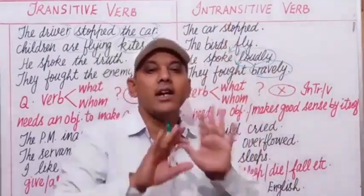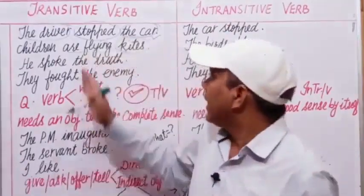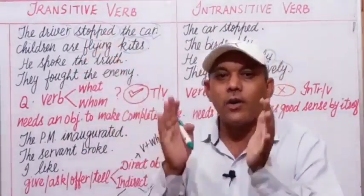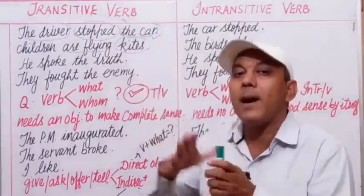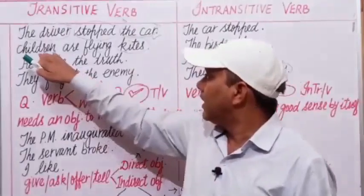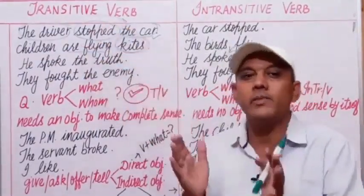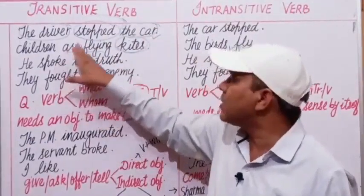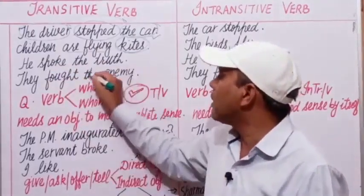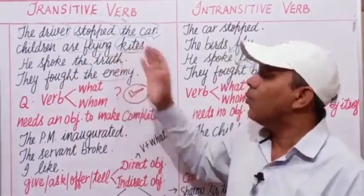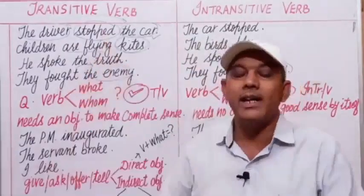In the first group, the action passes over to the object — in 'children are flying kites,' the action is received by the kites. The action of speaking passes to 'the truth,' and the action of fighting passes to 'the enemy.' When the action passes over to an object, the verb is known as a transitive verb.